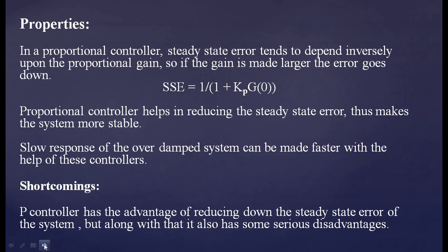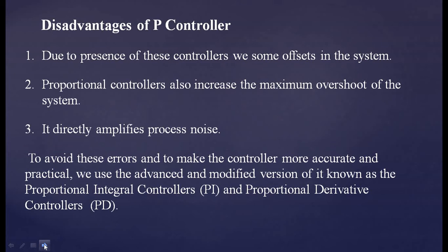Proportional controller has the advantage of reducing steady state error. But it also has serious disadvantages: due to the presence of offset in the system, proportional controllers increase the maximum overshoot of the system, and they directly amplify process noise. These are the three major disadvantages. To avoid these errors and make the controller more accurate and practical, we use the advanced modified versions — the proportional integral (PI) or proportional derivative (PD) controllers.